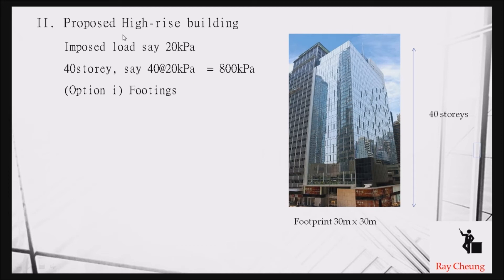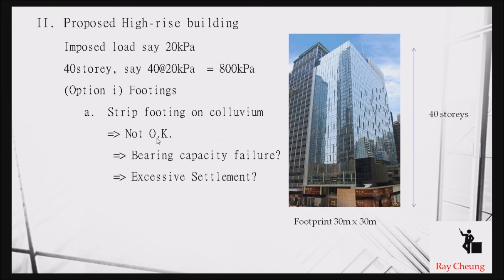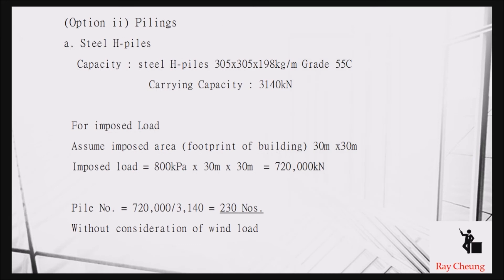For example, assume a 40-storey building with 20 kPa loading per floor. Multiplied by 40 storeys gives more than 800 kPa. Since the allowable footing capacity is up to about 200 kPa for typical soil, you need to consider settlement and capacity — most likely you cannot use a footing foundation. You need to choose a pile foundation. For a footprint of 40 by 30 meters, you can estimate the total load and divide by the capacity per pile — roughly you need at least 230 driven H-piles.